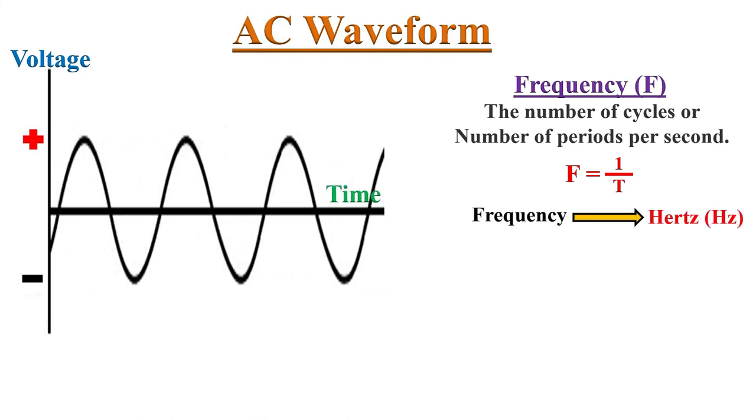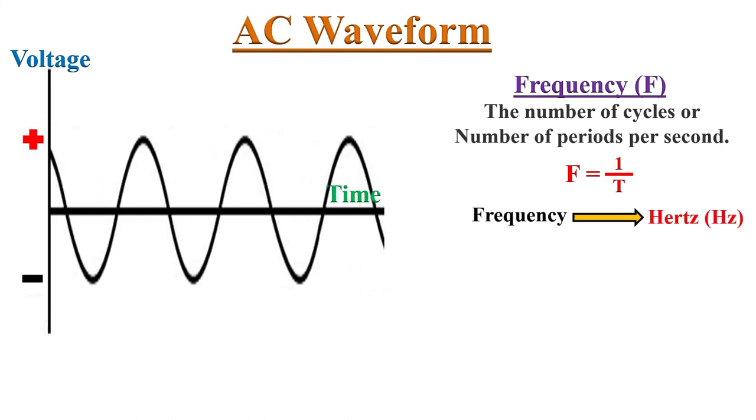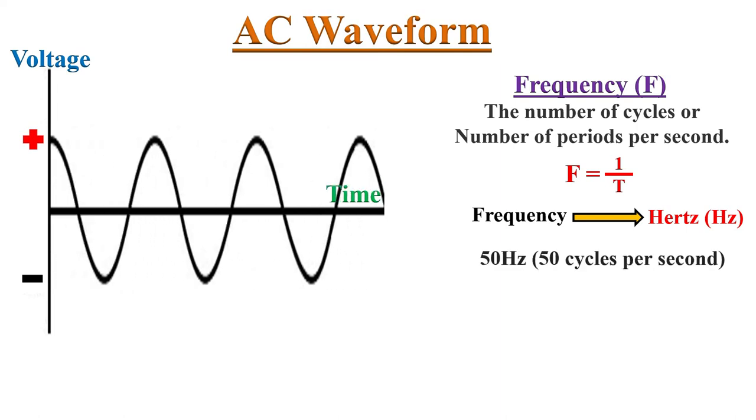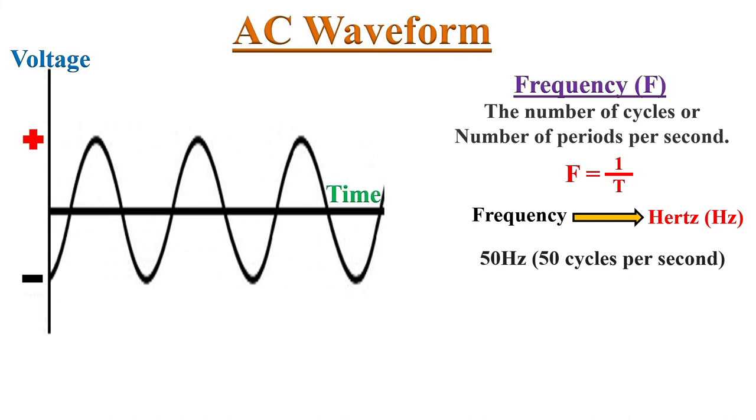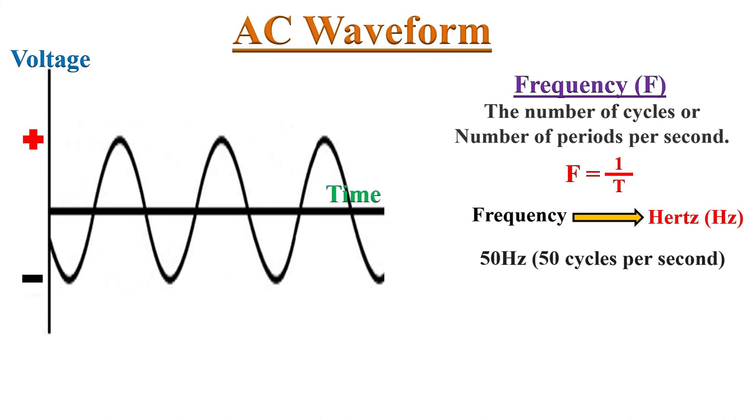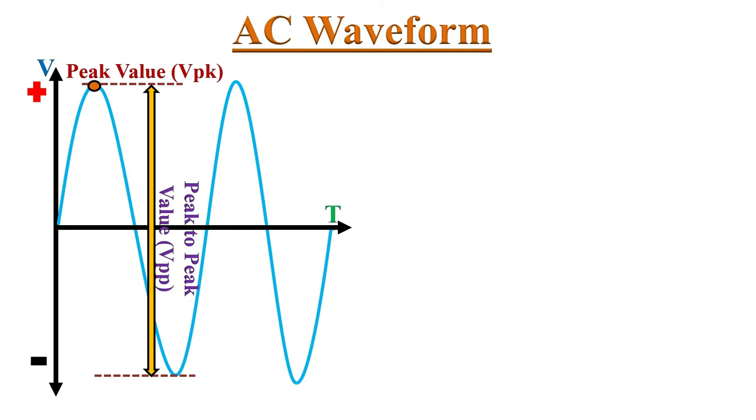Frequency is measured in hertz. Low frequencies such as 50 or 60 hertz or cycles per second are used for domestic and commercial power supplies. The average of instantaneous values of alternating current over a complete cycle is called average value of that waveform. Average value can be obtained by using the formula 0.637 into peak value.